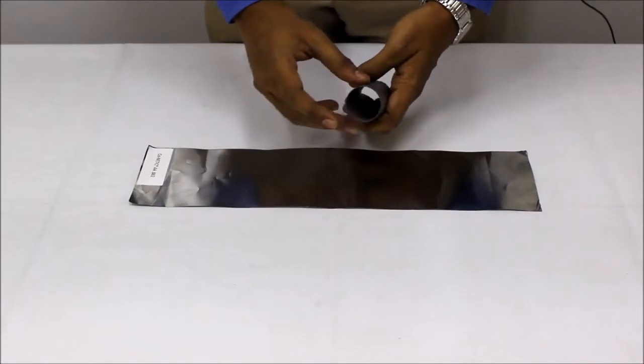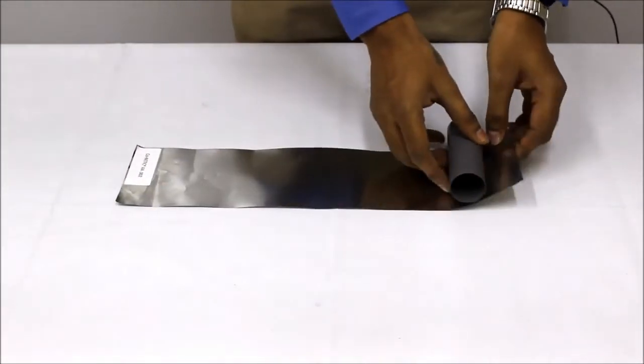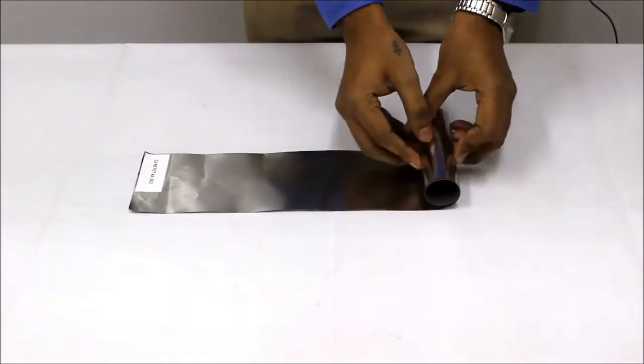Suppose you want shielding from magnetic fields inside this barrel. So you can easily wrap the foil around any object.